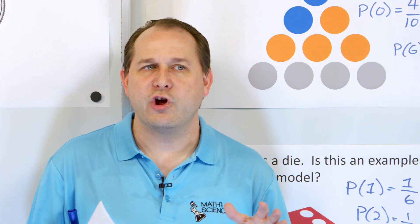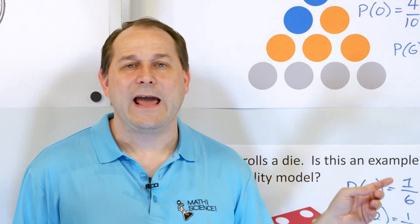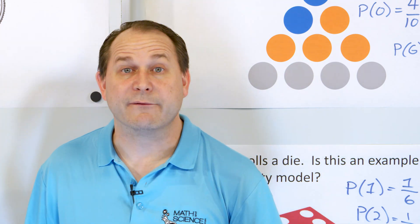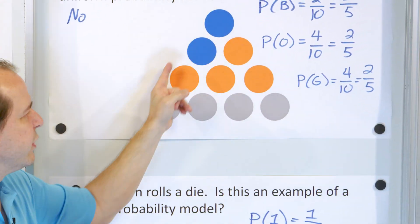We now know how to find probability, and we also want to know what kind of problem we're dealing with. When all outcomes of an experiment have equal likelihood, we call it a Uniform Probability Model, like rolling a die or flipping a coin. When outcomes have non-equal probabilities, it's a Non-Uniform situation. Follow on to the next part — the next lesson will continue with Uniform Probability Models.